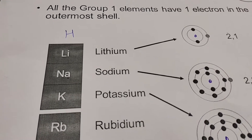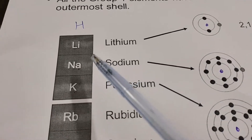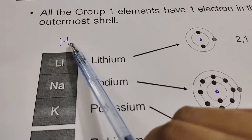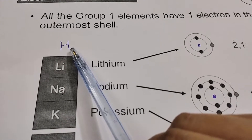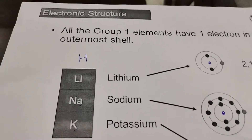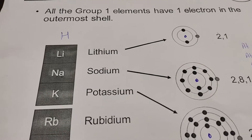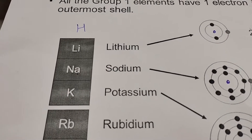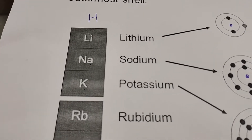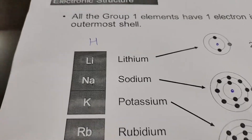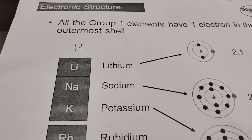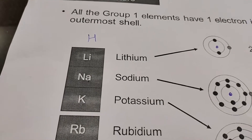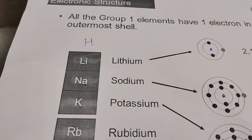Group one elements are also called alkali metals. If you observe, lithium, sodium, potassium, and rubidium are all metals, but hydrogen is a non-metal. Group one elements contain one electron in the outermost shell. Valence electrons are the electrons present in the outermost shell.